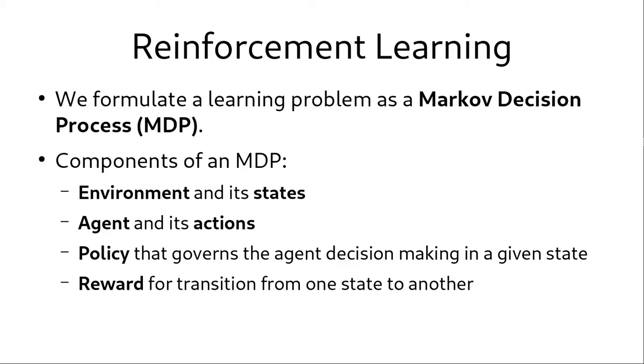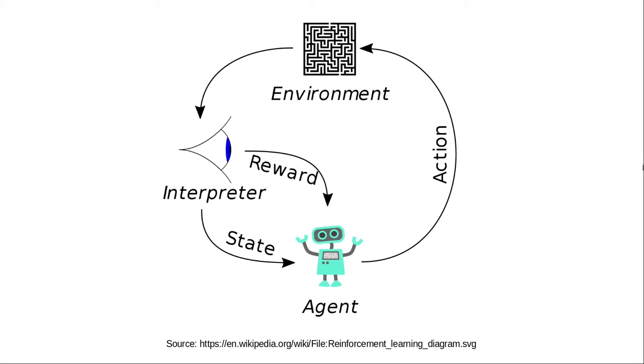To understand more about RL Restore, let's quickly look at what reinforcement learning actually is. So in reinforcement learning, we formulate a learning problem as a Markov decision process or an MDP. An MDP essentially contains an agent, which is the decision making agent. And this agent interacts with the environment by performing certain actions. And the agent's actions change the state of the environment. The agent has a policy through which its actions are governed. And the agent also receives a reward depending upon the transition from one state to another. So this picture clearly depicts a Markov decision process.